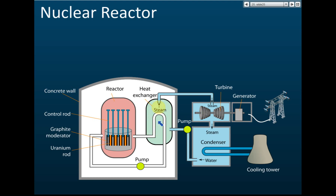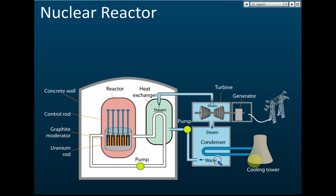The nuclear reactor generates a large amount of heat, and this heat must be disposed of or else it will explode. So we need a cooling system - we have a condenser, water, and a cooling tower. Those are the three main parts of a nuclear plant.